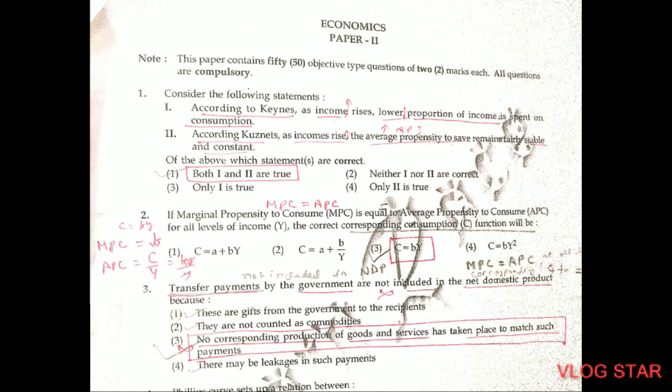Question number 2. If MPC is equal to APC for all levels of income, the corresponding consumption function will be C = BY. Because when you find MPC by doing first order differentiation of BY with respect to Y, Y's derivative is 1, so MPC equals B. And APC = C/Y = BY/Y = B. So both MPC and APC equal B at consumption function C = BY.